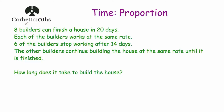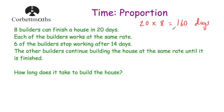We know that 8 builders are working on the house and it takes them 20 days. So if it was just one builder, it would take 8 times longer. We're going to take our 20 days and multiply that by 8, and that'll tell us how long it would take if just one builder was working on the house. 20 times 8 is equal to 160 days.